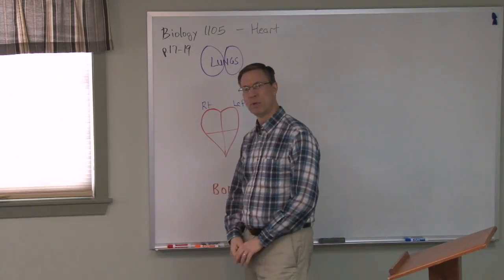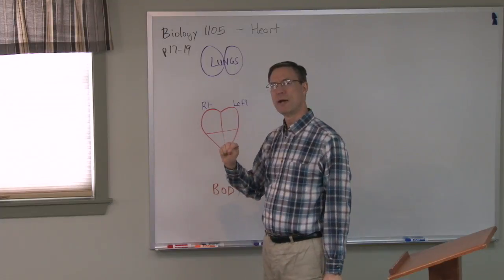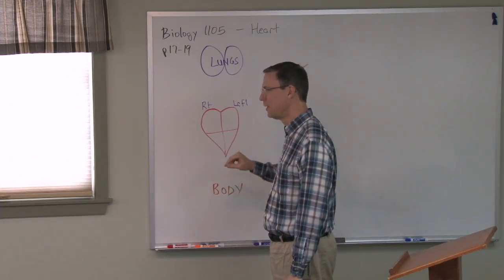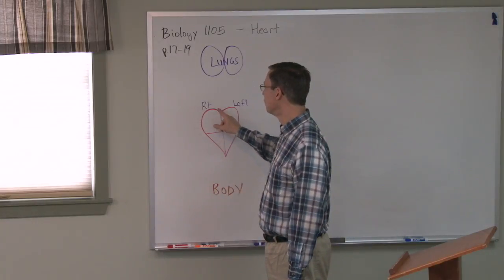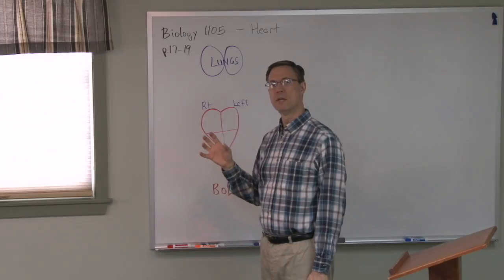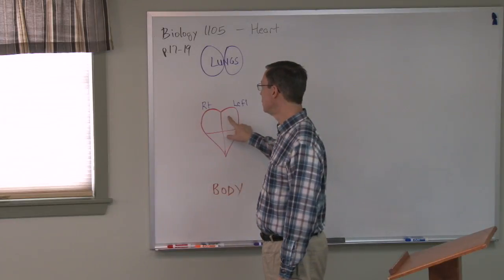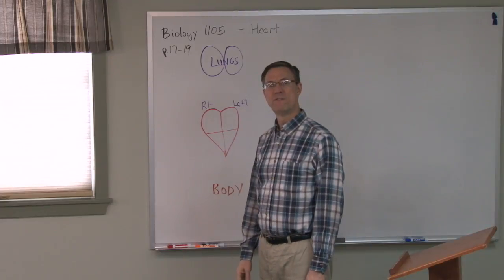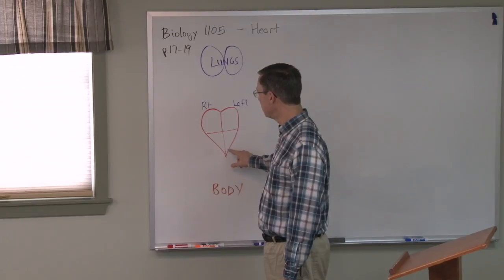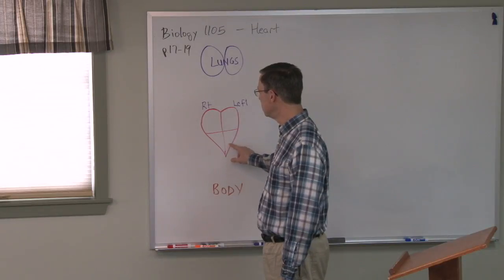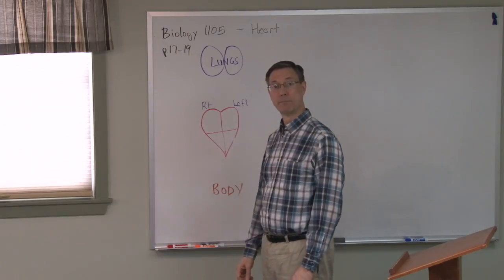Now let's talk about how the blood flows. The heart is actually divided — you see this heart shape here. The heart has four main chambers. The top two chambers are called the atriums, and the bottom two are the ventricles. It's easy to remember that because at the bottom of the heart you see the V shape, and that'll help you remember that the ventricles are at the bottom.